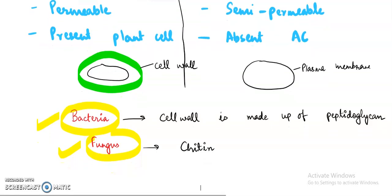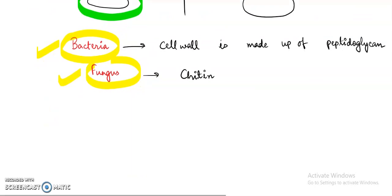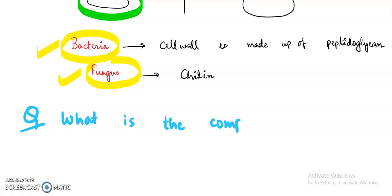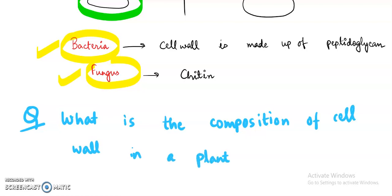If you haven't understood any point, don't hesitate to replay — the concept should be clearer to you. My question for this video is: what is the composition of cell wall in a plant cell? I have already discussed this in the video — if you don't know the answer, replay to get it. Don't hesitate to ask any query; the description has my email ID. Please share this channel or video with your friends so everyone can benefit. See you in the next video, thank you.